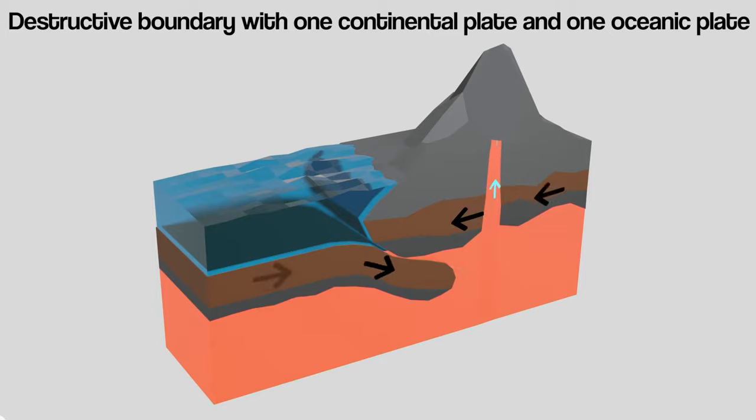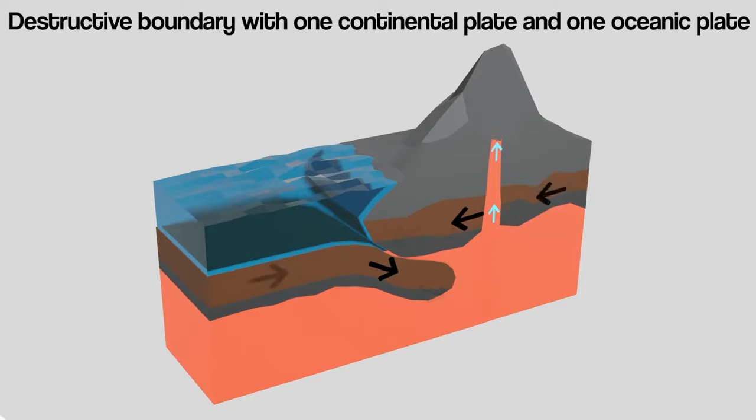Pressure begins to build up, much like it does when you shake a bottle of fizzy drink. And eventually, the pressure in the crust becomes too great and the gas and lava violently explode out of the rock in a volcanic eruption.